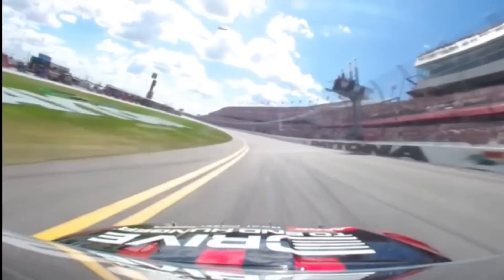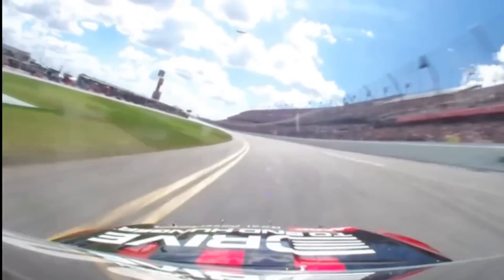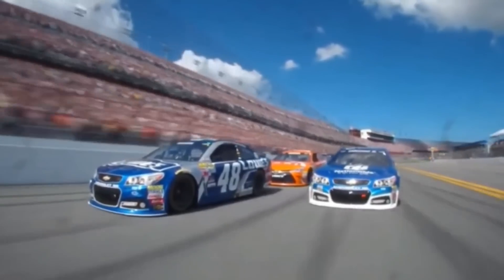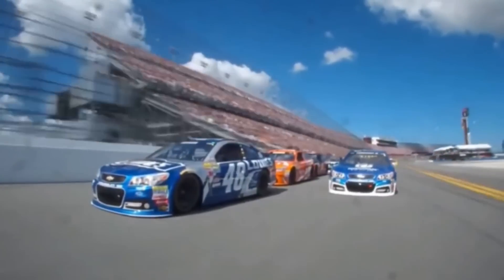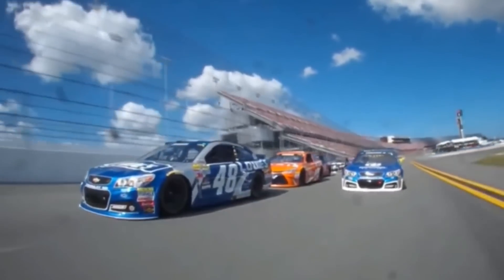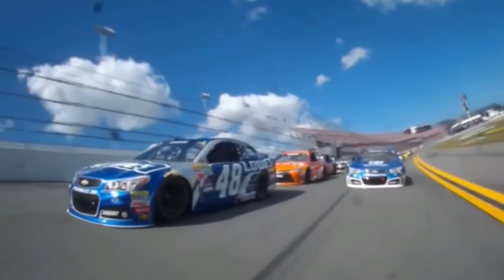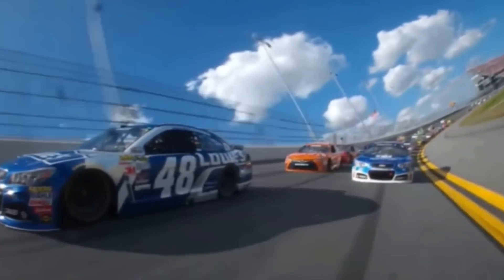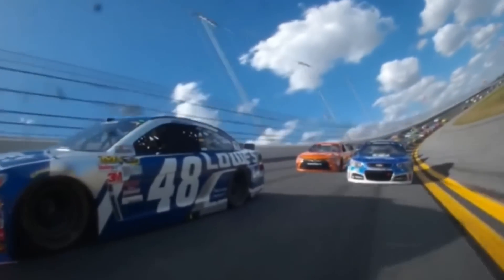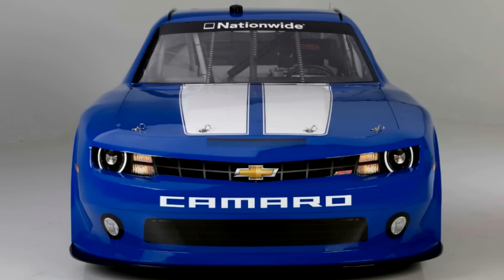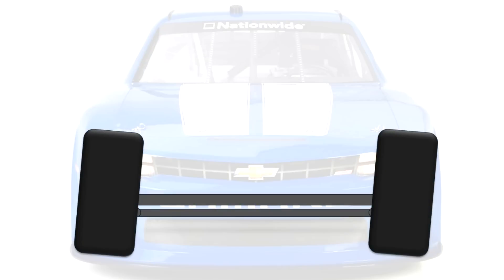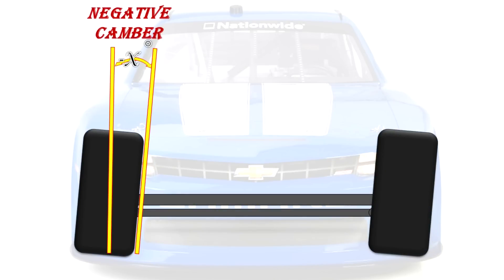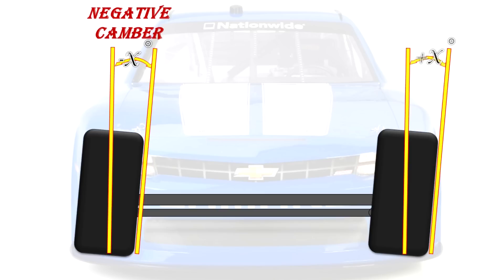NASCAR and other cars that race on an oval circuit can have a very specific camber setup to account for the banking and subsequent lateral forces and weight transfer applying in only one direction. This consists of a negative camber on the uphill side and a positive camber on the downhill side.